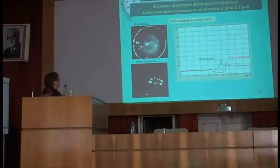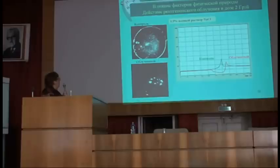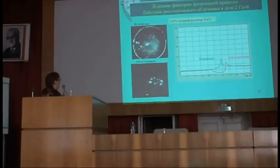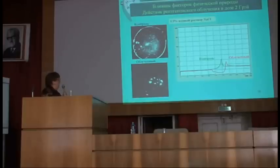Попробовали воздействовать на физраствор рентгеновским облучением в дозе 2 Гр. В контроле основная масса крупных кристаллов соли расположена по трёхфазной границе, и некоторые мелкие кристаллы занимают центральную часть капли. После облучения: очень мелкие кристаллы едва видны по краю капли, и очень крупные кристаллы сформированы ближе к центру, где сосредоточена подавляющая масса соли. Контроль — обычная однопиковая кривая динамики.